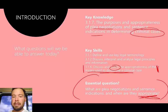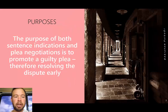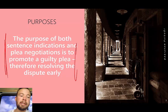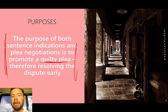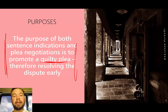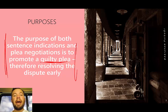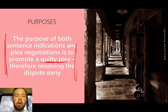The key knowledge here is the purposes of sentence indications and plea negotiations, and the purpose is really simple: it's about promoting a guilty plea. It's all about incentivizing that guilty plea to resolve the dispute early. The benefit of resolving the dispute early is you remove backlog from the court system — which we have a massive backlog of due to COVID and the fact they couldn't hold jury trials. The more guilty pleas you get, the less trials you have to run, the quicker you get through cases, and the less time people are left waiting for justice — both victims, accused persons, and society as a whole.